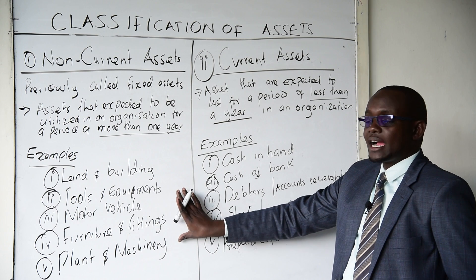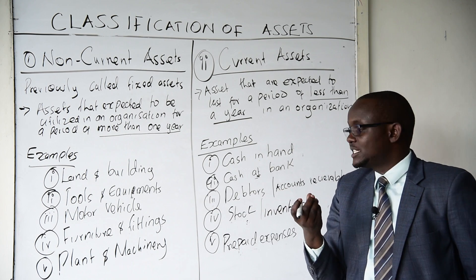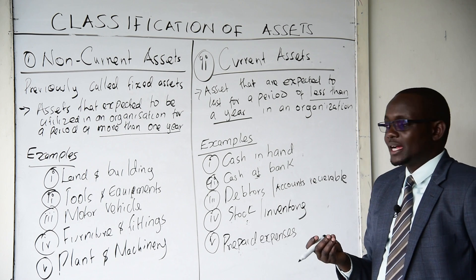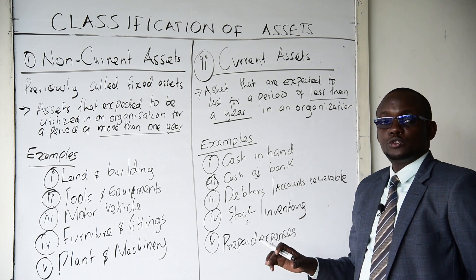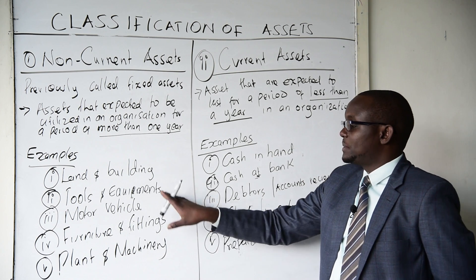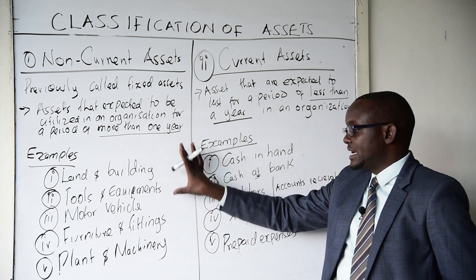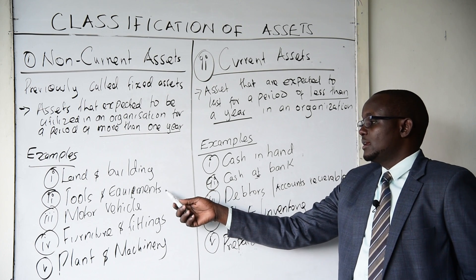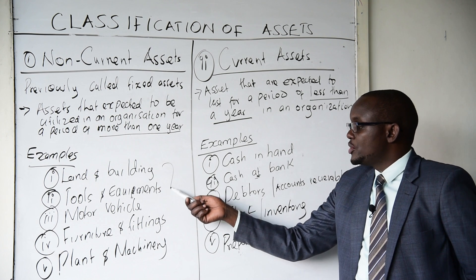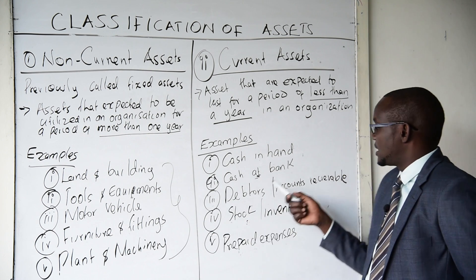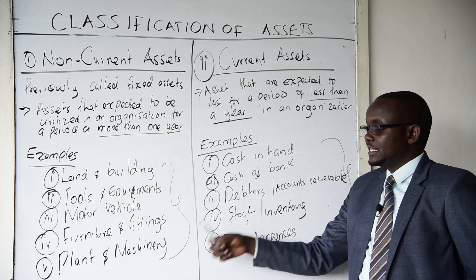For you to understand accounting, you need to master this — have it at your fingertips. It becomes easy to master other topics, especially ledgers, because you will know what an asset is. When you talk about debit and credit in ledgers, you will understand what we mean by an asset. It is very key that you memorize this to make your accounting life very easy.